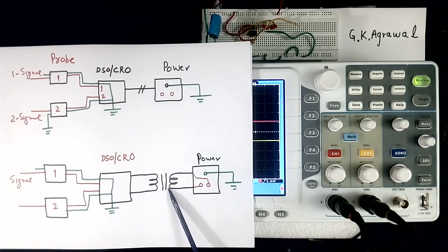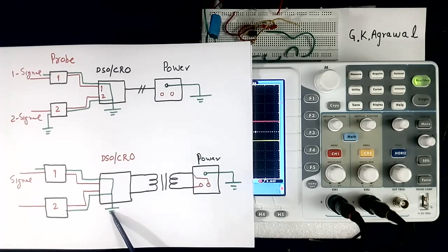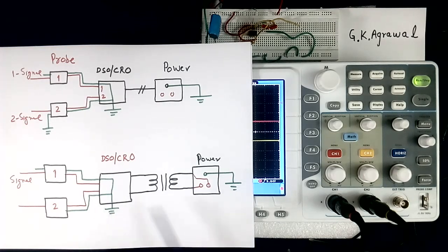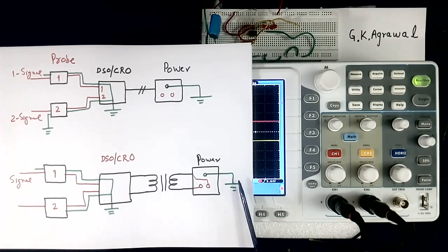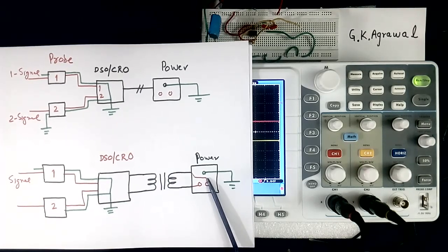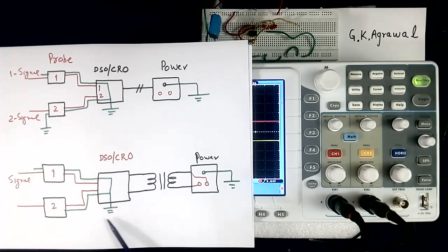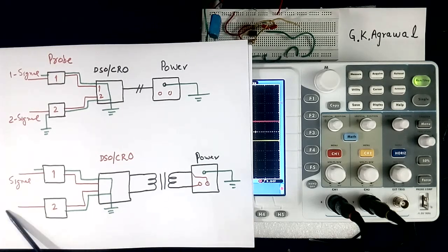Another way of using a CRO is to connect an isolation transformer between the incoming supply and the CRO. This is a 1-to-1 transformer. In this case, the grounding of the AC input signal and the power supply can be different. This is a much safer way of using a CRO. Please connect a transformer between CRO and power. Then this common point can be kept floating and connected to the signal common wherever required.